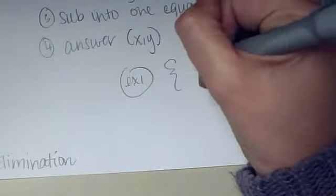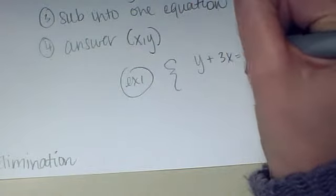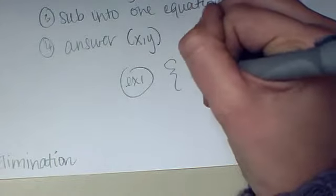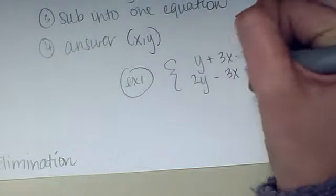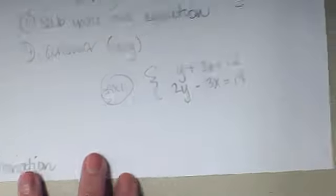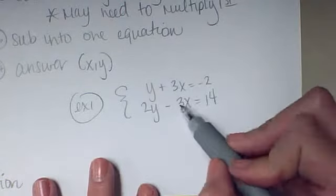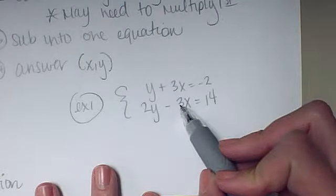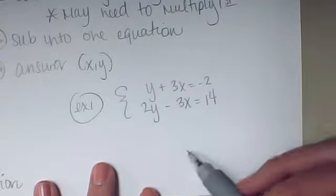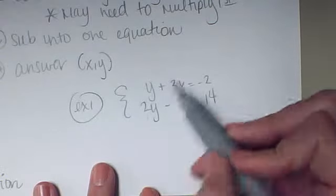We're going to look at one example here on the front and two on the back. For the first example we have y plus 3x equals negative 2, and 2y minus 3x equals 14. I'll notice that these two have exactly the same coefficient with opposite signs. So these are already lined up.